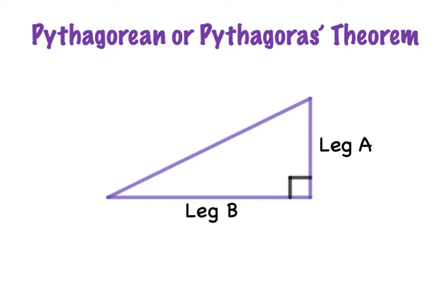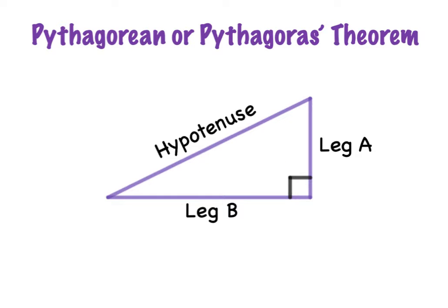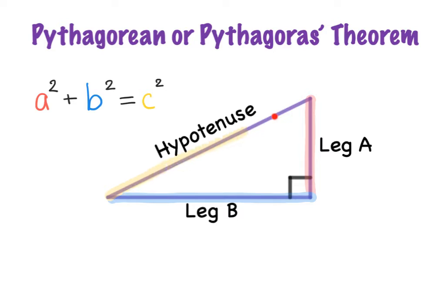Now, the side that is directly across from the right angle is called the hypotenuse. The hypotenuse always, always, always needs to be across from the right angle — this is the most important side that we have to make sure we're putting in the right place in our formula. So the formula is A squared plus B squared is equal to C squared, where A and B are the legs and C is always the hypotenuse.